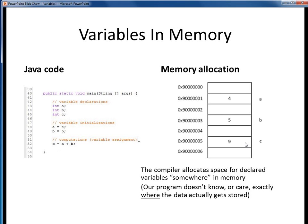One important point here is that the compiler decides where this data is going to live in memory, not us. We don't know, and frankly we don't even care, exactly where all this data lives. We just refer to it by the symbolic variable names a, b, and c. Also, a, b, and c aren't exactly the best variable names — those names don't suggest anything about what this data means, so we can pick better variable names than these.